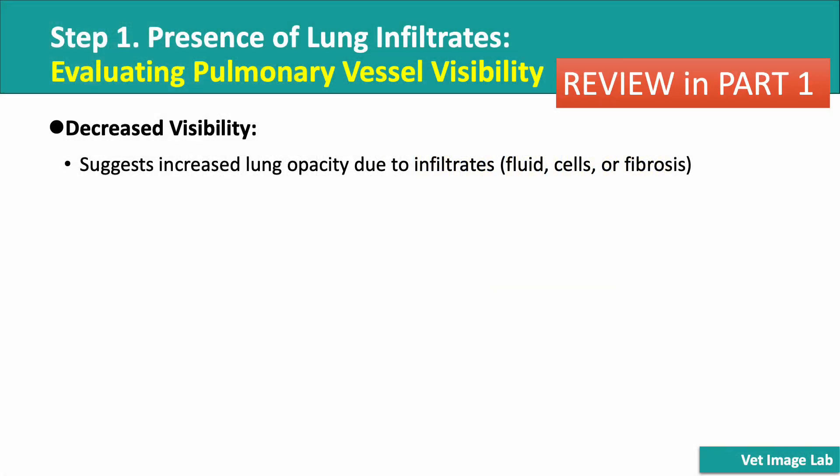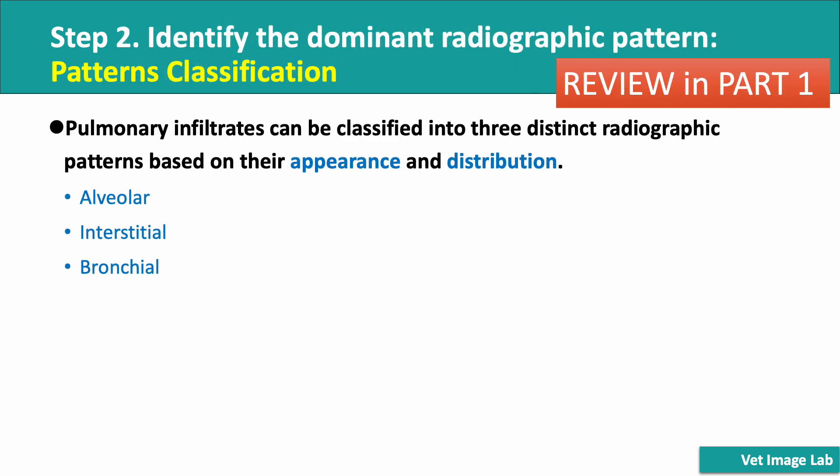In Part 1, we covered the importance of checking pulmonary vessel visibility to determine if infiltrates are present. Then, in the second step, we learned how to classify the type of infiltrates, focusing on how to differentiate between alveolar and interstitial patterns, two of the three major lung infiltrate types. If you'd like a refresher on those concepts, feel free to check out Part 1 before continuing.